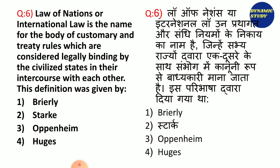Next question: 'Law of nations or international law is the name for the body of customary and treaty rules which are considered legally binding by the civilized state in their intercourse with each other.' This definition was given by: 1. Brierley, 2. Stark, 3. Oppenheim, 4. Hugus. Definitions are very important in international law. And the answer is third — Oppenheim.